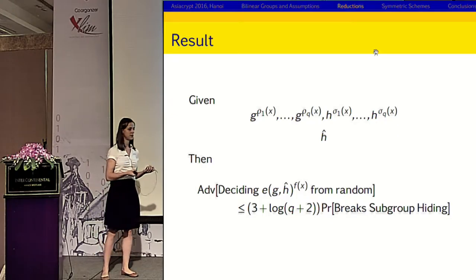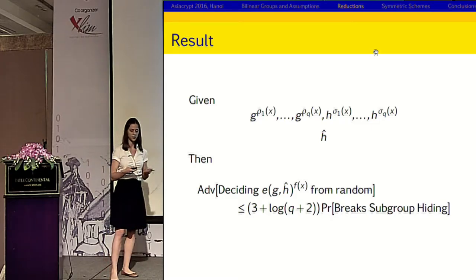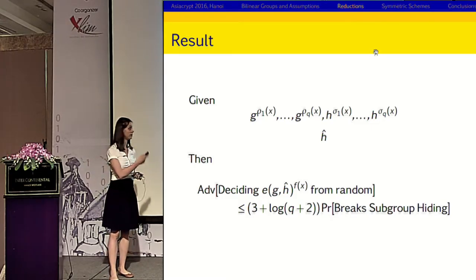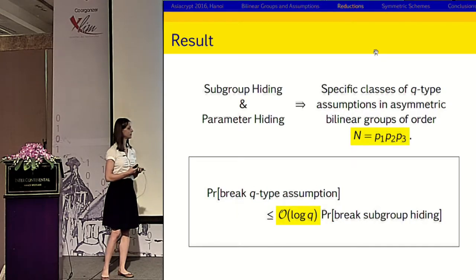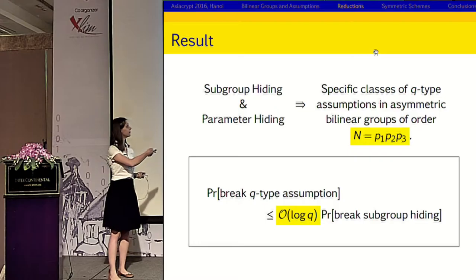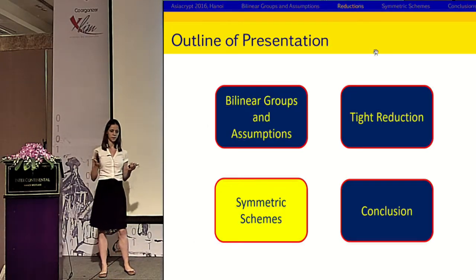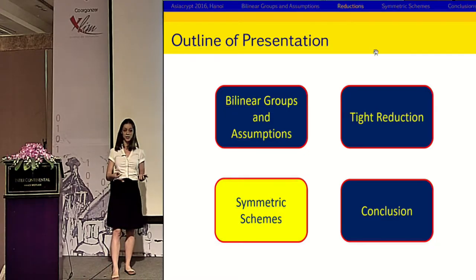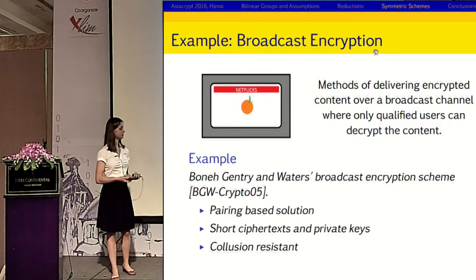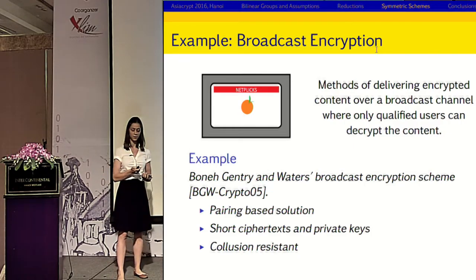Our final result: the adversary is given some inputs from G and some inputs from H and an Ĥ element. The functions of the exponents of G need to be linearly independent from the function that the adversary is challenged on. The advantage the adversary has of distinguishing this element from random is less than some function of log Q times the advantage it has at breaking subgroup hiding.